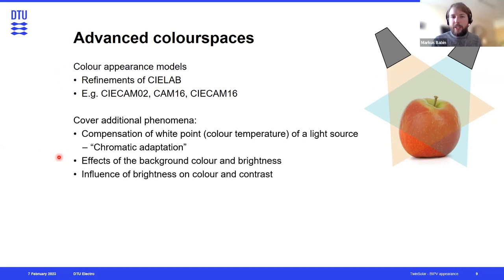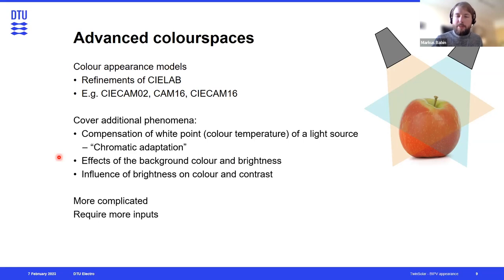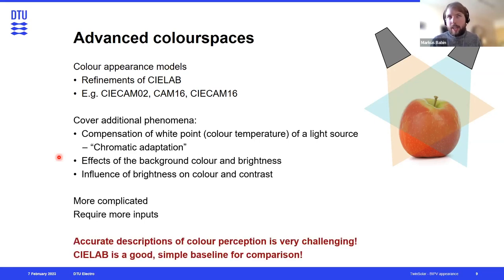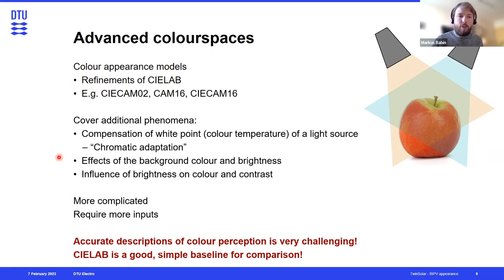There are also other effects taken into account, like correlations between background color, brightness, and contrast. But in essence, these models become much more complicated and require a lot more input variables. If we're talking about color description in BIPV contexts, that goes way beyond the scope, and I'm going to show a few graphs that use the CIE LAB color space because that is good enough for comparison.